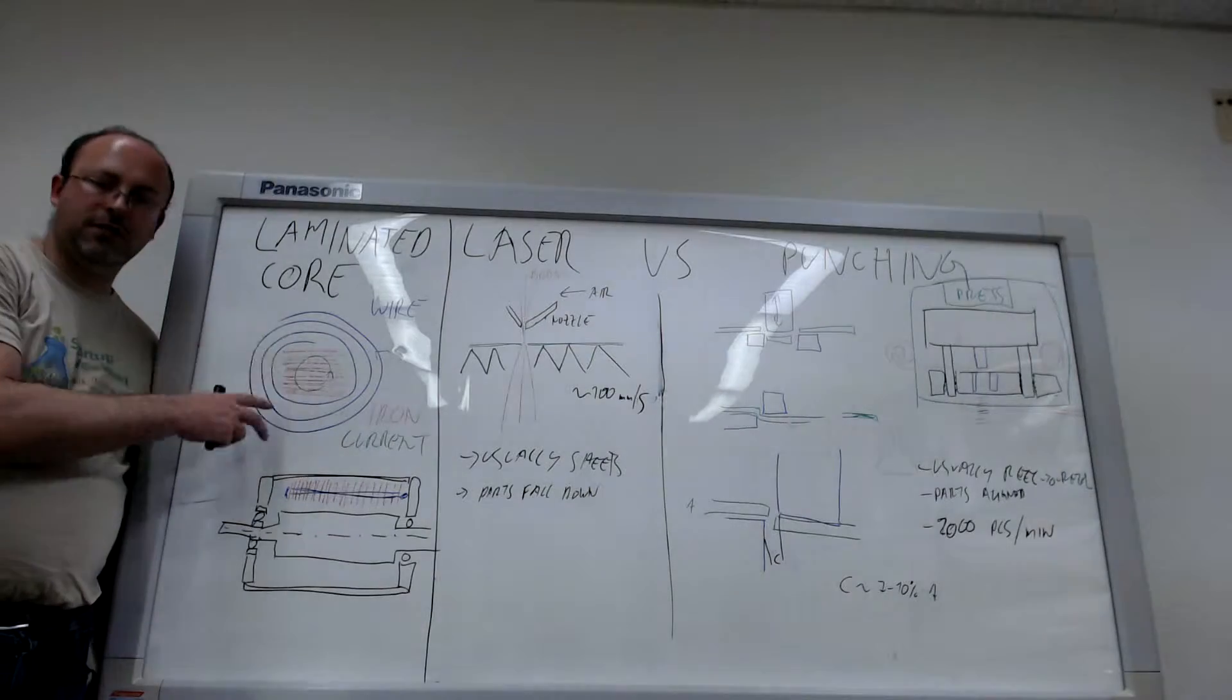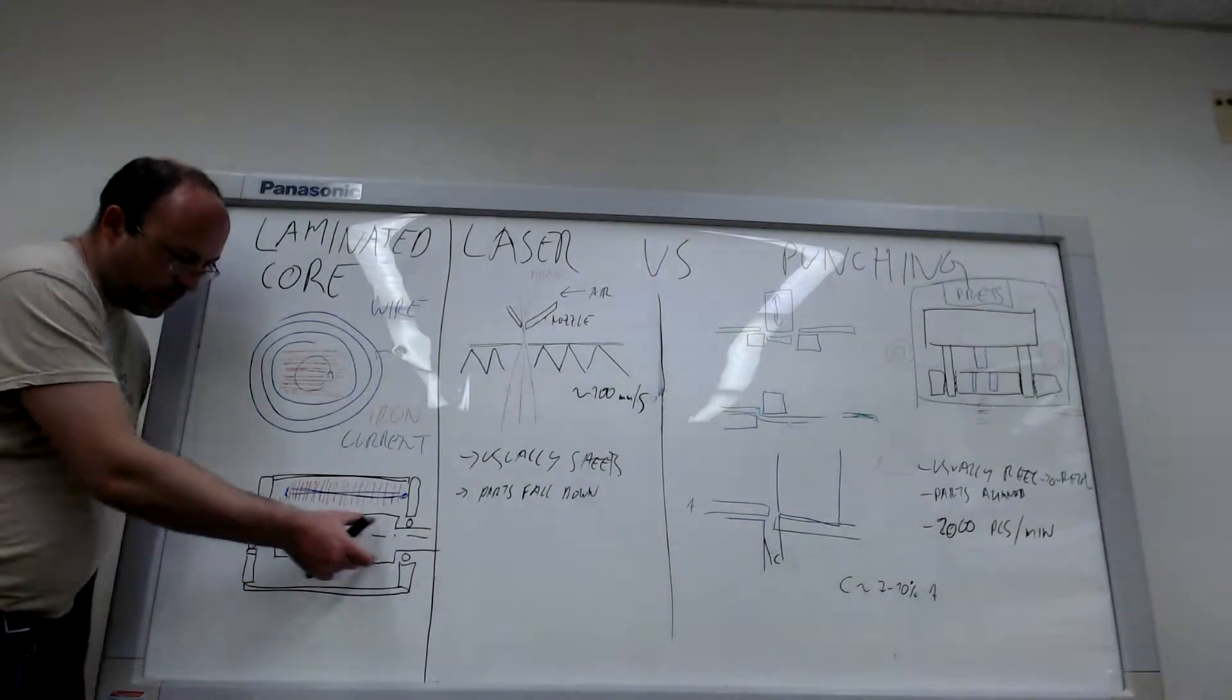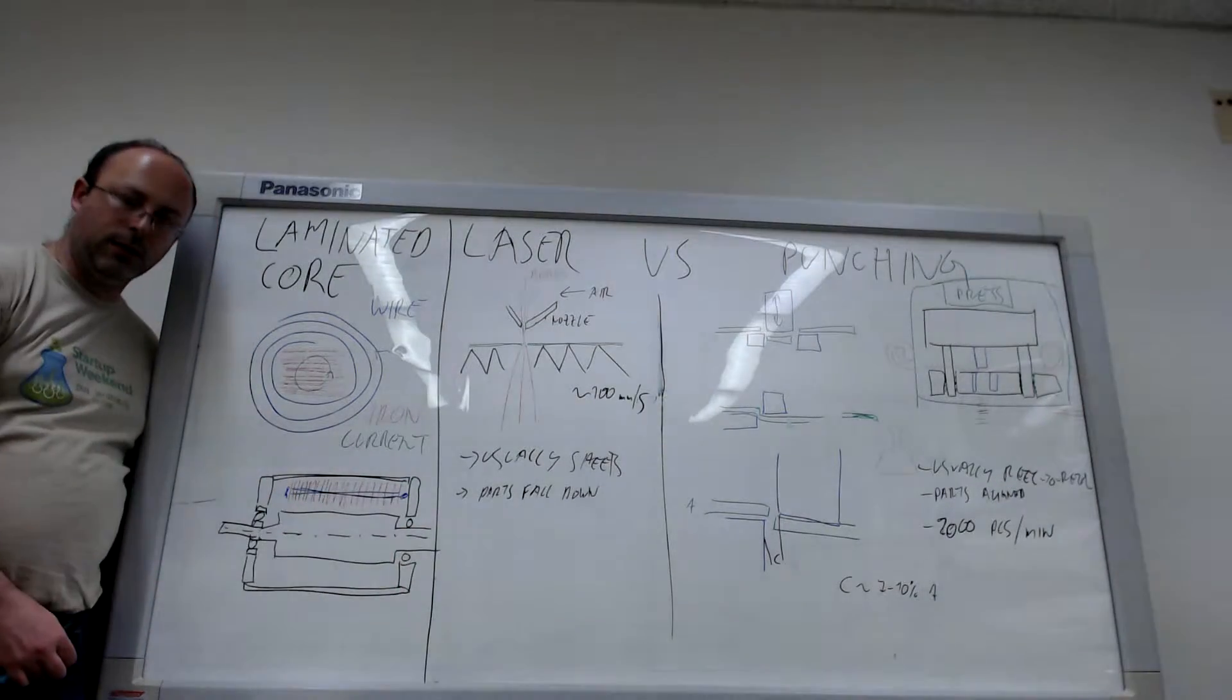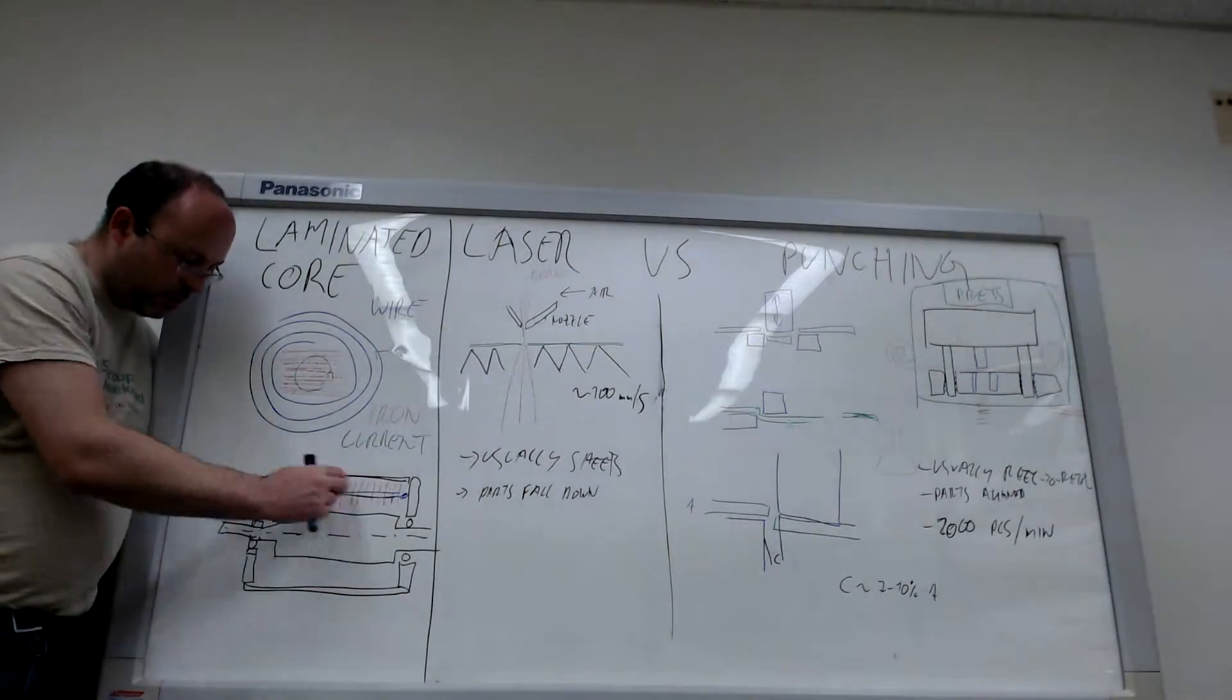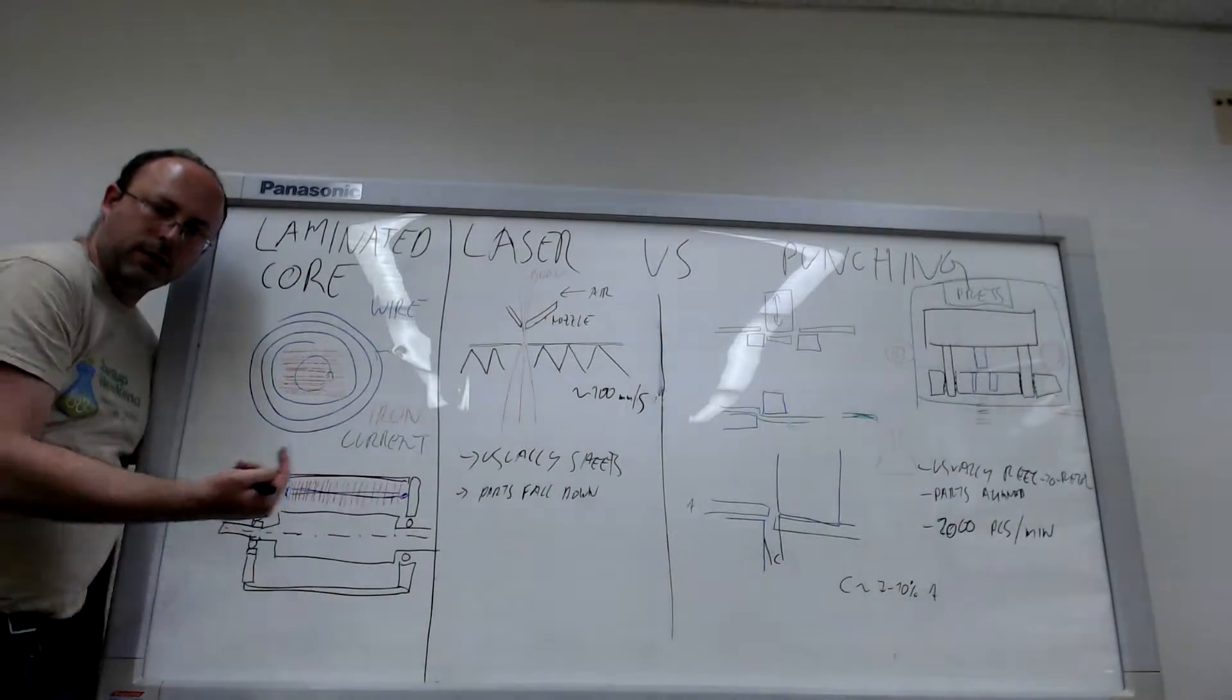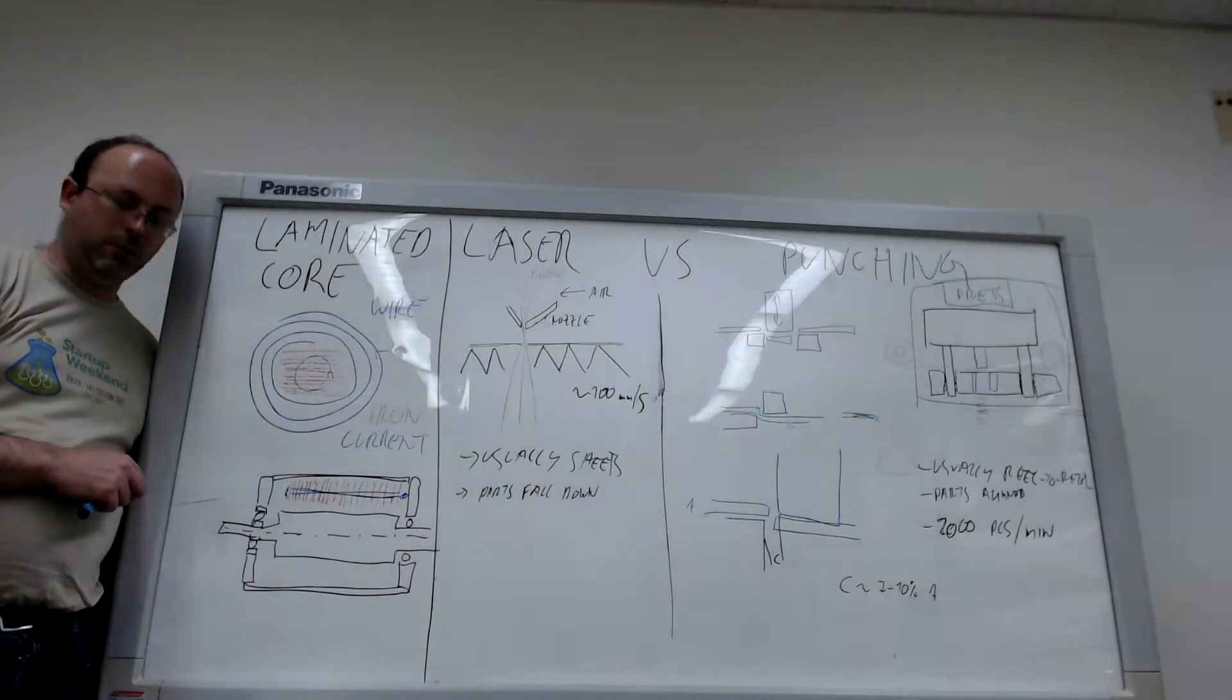So every transformer, every electric motor is made out of such a laminated core. In our electric motor, this is the rotor. This is the front, the back covers, ball bearing here and that is our laminated core, our stack. And our coil goes around like this for one pole and then you have it symmetrical all around with different poles.